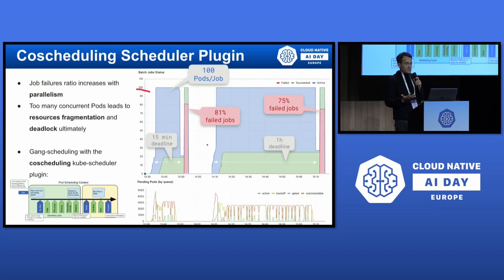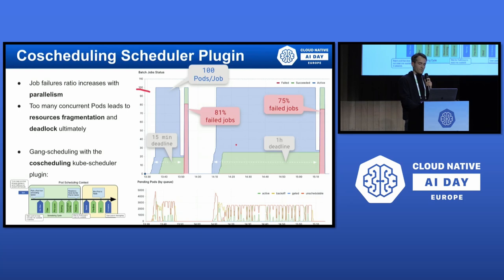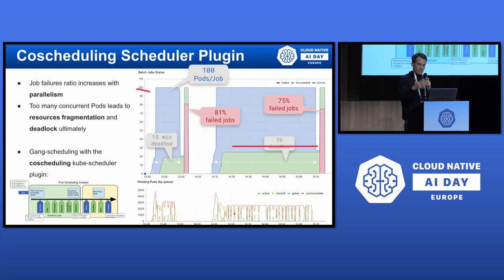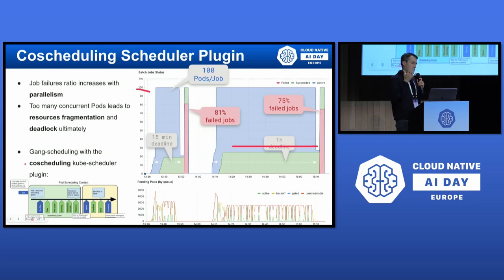What happens is that many jobs get scheduled partially, ending up in a deadlock situation. No matter how much extra time we give the system — we reran the test with a deadline of one hour instead of 15 minutes — we still have a very high failure rate. The Kubernetes scheduler keeps retrying at each scheduling cycle, but there is no chance it randomly schedules the entire set of pods for a single job atomically.